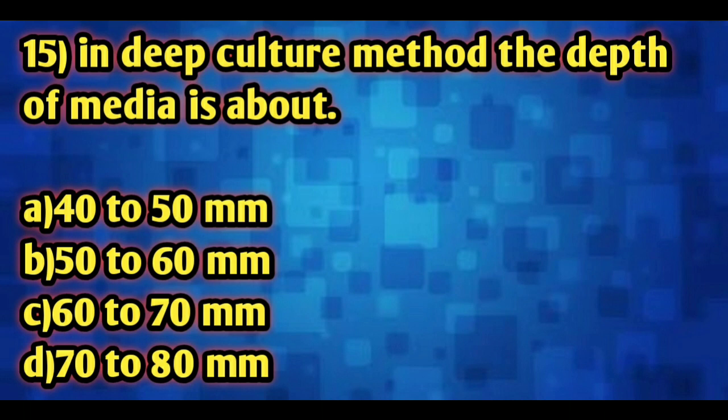Question number 15: in the deep culture method, the depth of the media is about how much? The options are: 40 to 50 mm, 50 to 60 mm, 60 to 70 mm, and 70 to 80 mm. The right answer is Option D — 70 to 80 mm. In the deep culture method, the depth of the media is 70 to 80 mm.